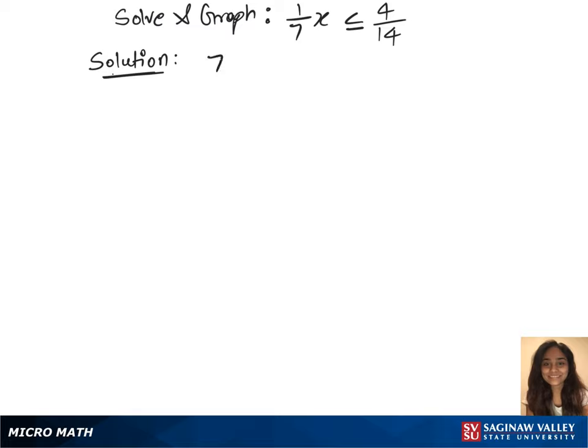So that's 7 over 1 times 1 over 7x on the left, less than or equals to 7 over 1 times 4 over 14 on the right.